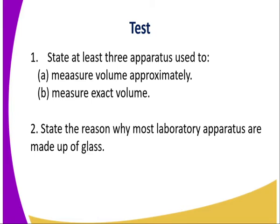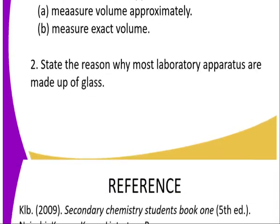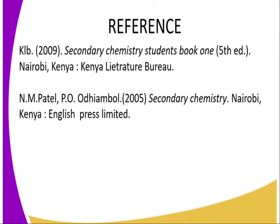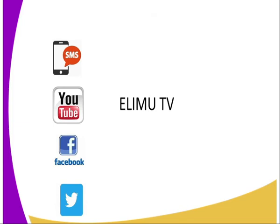So can we try and answer these questions to test whether you have understood this lesson? State at least three apparatus used to measure volume approximately, and also state apparatus which can be used to measure volume exactly. Also state the reason why most laboratory apparatus are made up of glass material. For more information, refer to Secondary Chemistry Students Book One and Patel, which gives each apparatus with its use.